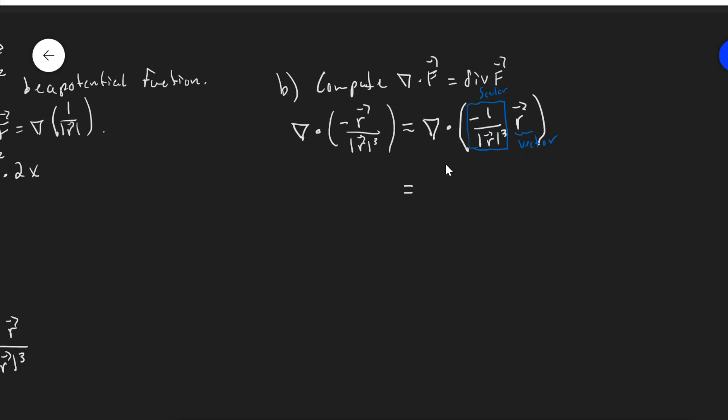Which tells me that this is given by del of the scalar, negative 1 over magnitude R cubed, del of the scalar dot my vector function R, plus my scalar negative 1 over R cubed times the divergence of my vector function R.